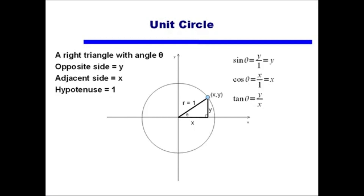You'll notice I've only talked about these three trig functions. We also have cosecant, secant, and cotangent. However, because these are simply reciprocals of sine, cosine, and tangent, my discussions will generally deal with only those three. From this we can figure out that cosecant of theta is 1 over y, secant of theta is 1 over x, and cotangent of theta is x over y.